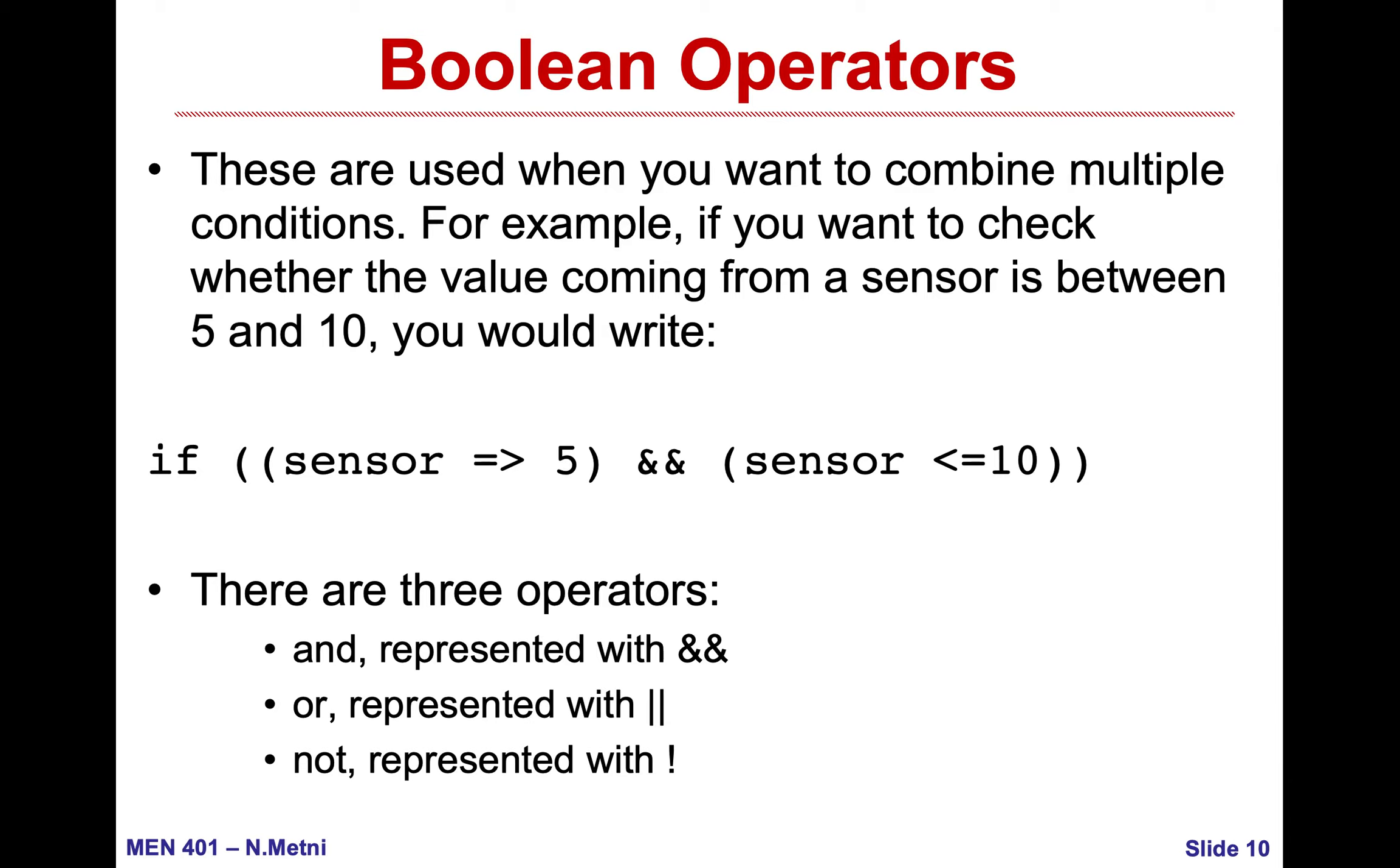I can use boolean operators. For example, if I'm controlling thermal comfort inside a room, I say if temperature is above 23 and humidity is less than 60 percent do this, or if temperature is above 23 or humidity is above 70 turn on AC. The AND is represented by double ampersand sign, the OR is represented with double bar sign, and the NOT is represented by an exclamation mark.